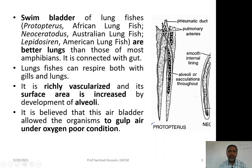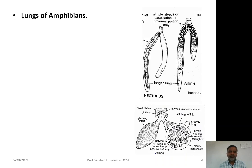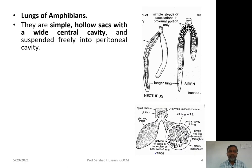It is believed that this air bladder allowed the organism to gulp air under oxygen-poor conditions. When lungfishes feel there is insufficient oxygen in the environment or oxygen from the gills is not enough to meet body requirements, they gulp air. The air passes from the gut into the swim bladders, which have a rich supply of blood so that diffusion of gases — uptake of oxygen and removal of carbon dioxide — takes place.